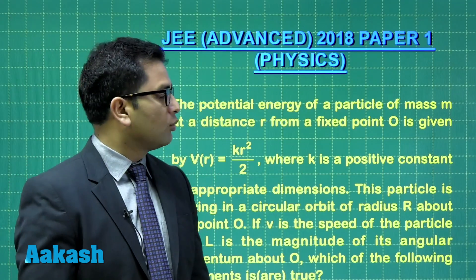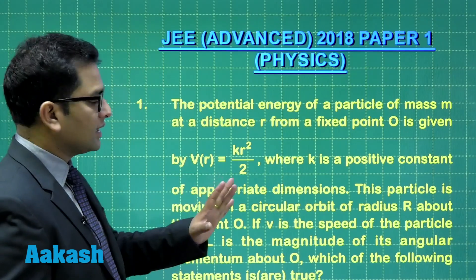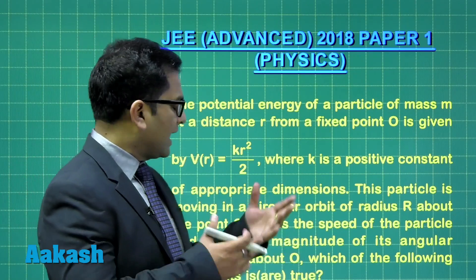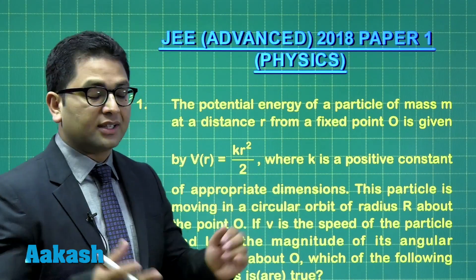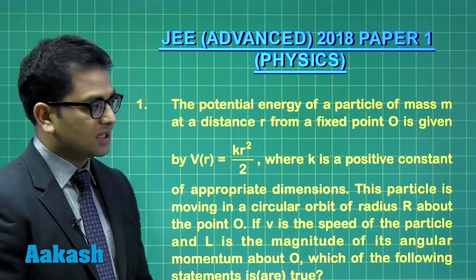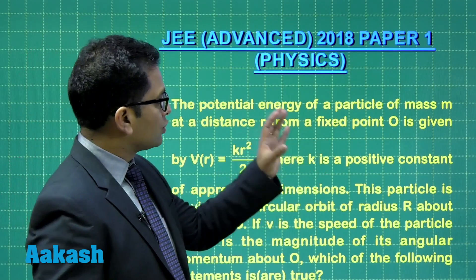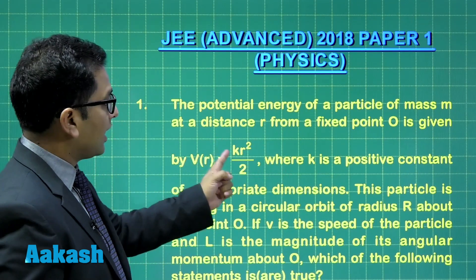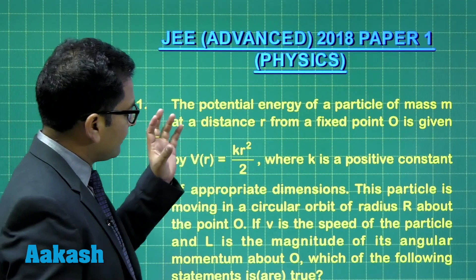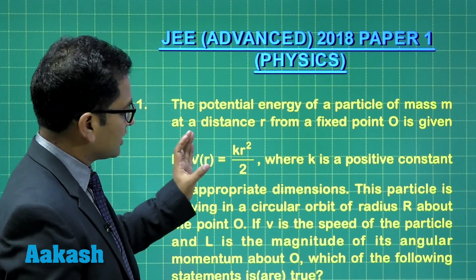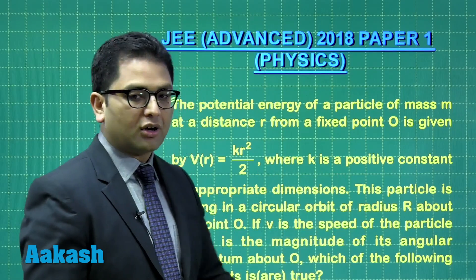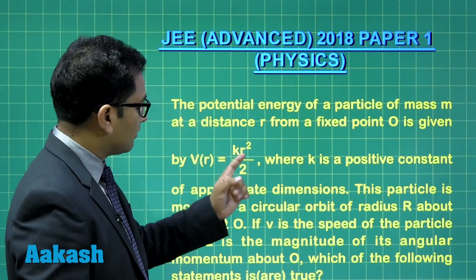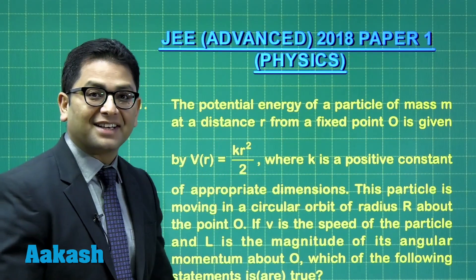Question number one with more than one option correct. This one is a very straightforward question and a regular question. Any student who has practiced through our regular textbook can wonderfully sail through this question. A particle is there whose potential energy is given by this much, and k is a positive constant. R is the distance from the fixed point. Mind you, this is not potential, this is potential energy.